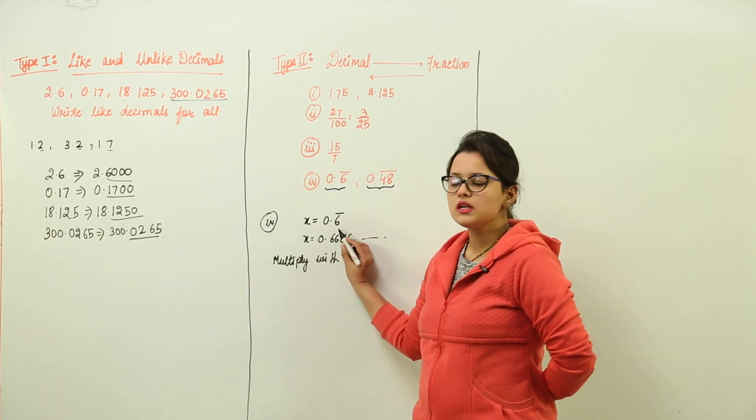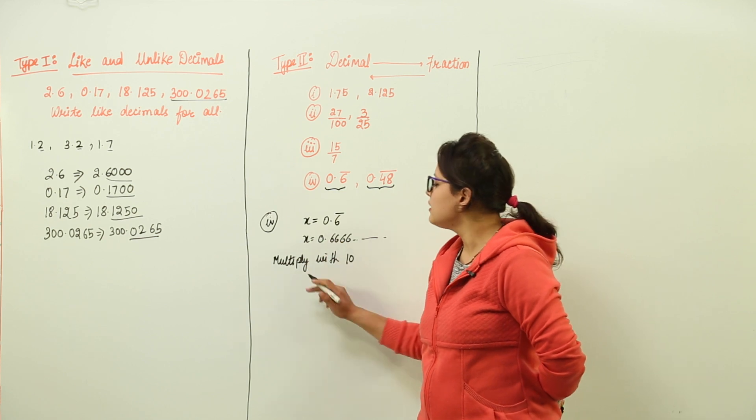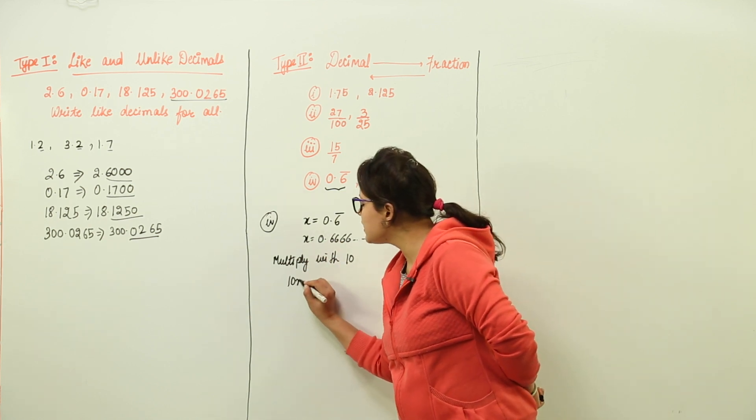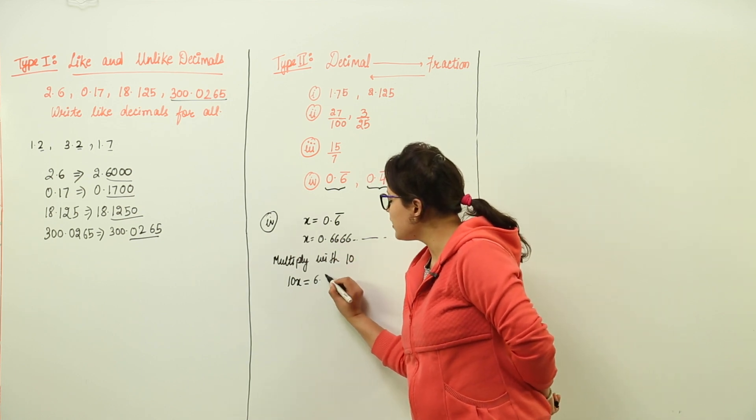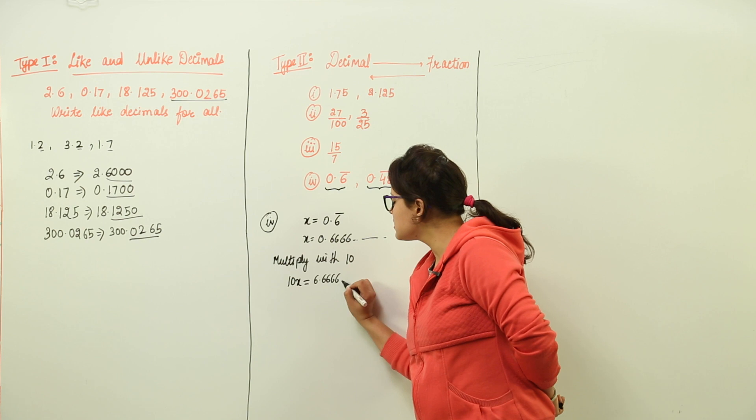So because 1 digit was repeating, I multiply both the sides with 10. What do I get? 10x equal to, and if you multiply this with 10, you get 6.6666 and so on.